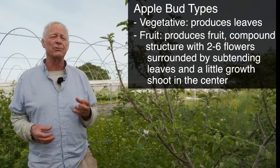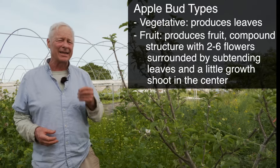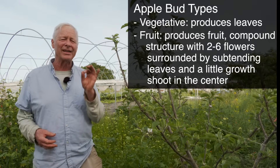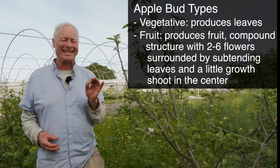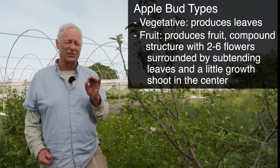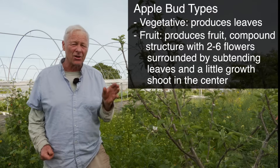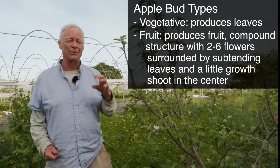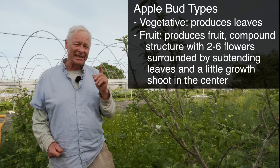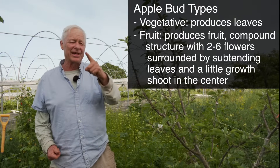Compound buds have a cluster of flowers with apples, usually two to six flowers, and a subtending circle of leaves, which are critically important because early in the season that's where the source of photosynthesis develops sugars that shuttle right to the developing fruit and help it enlarge early in the season. Additionally, that compound bud has a vegetative shoot.